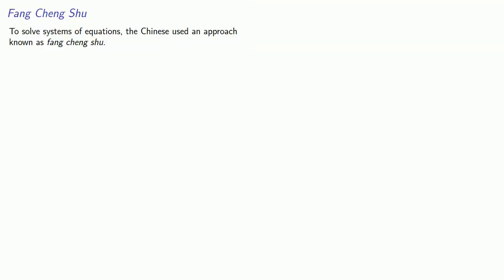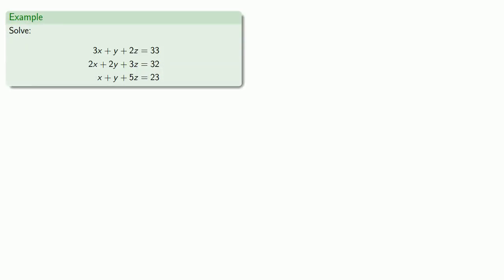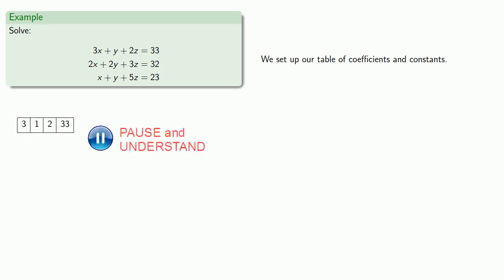To solve systems of equations, the Chinese used an approach known as fang cheng shu. This should be viewed as being done on a counting board, but we'll demonstrate using more familiar numbers. So let's try to solve a system with three variables. So setting up our array, our first equation, 3x plus 1y plus 2z equals 33, gives us the row 3, 1, 2, 33. The second equation, 2x plus 2y plus 3z equals 32, gives us the row 2, 2, 3, 32. And the third equation will give us the row 1, 1, 5, 23.